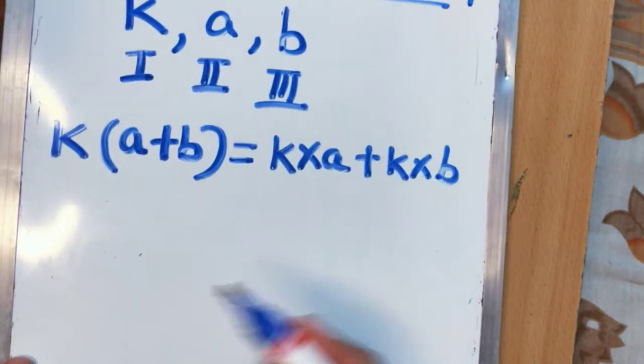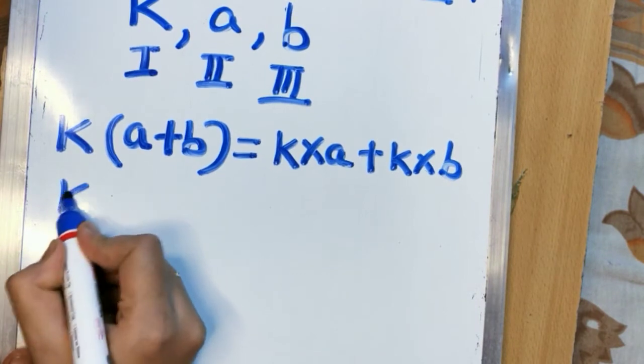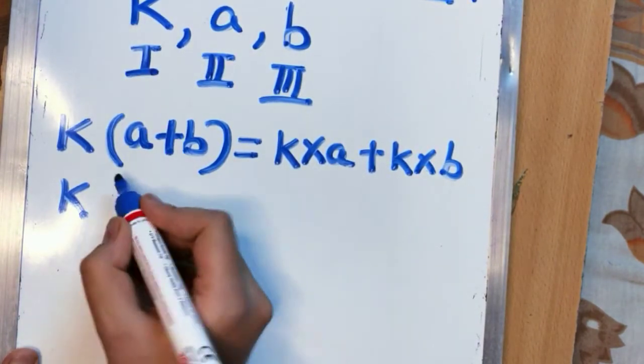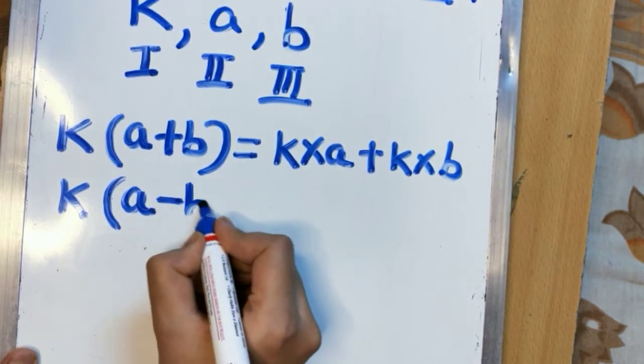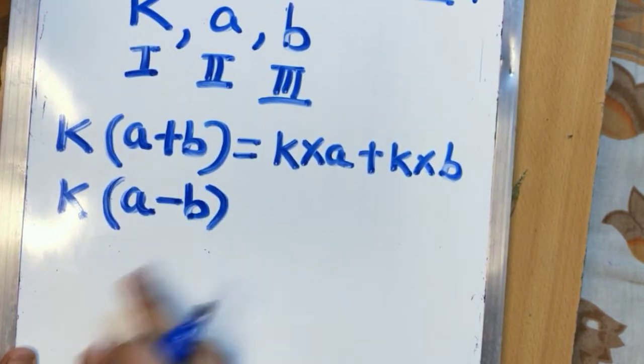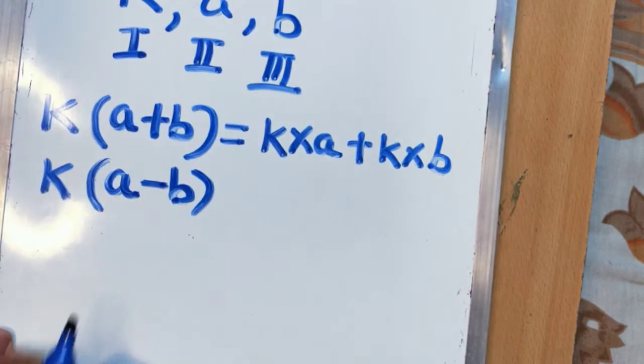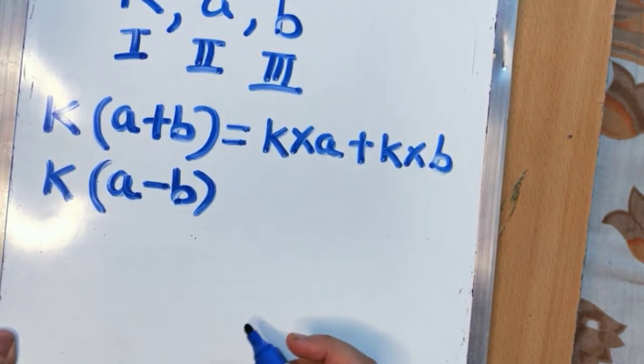Clear? Similarly if k is getting multiplied with the subtraction of a and b that means k into a minus b. So how I can represent this thing again?